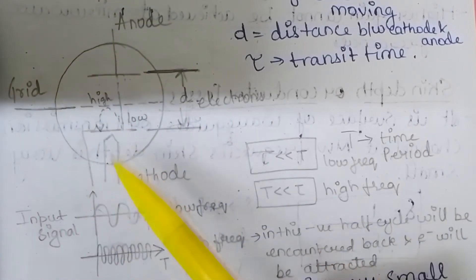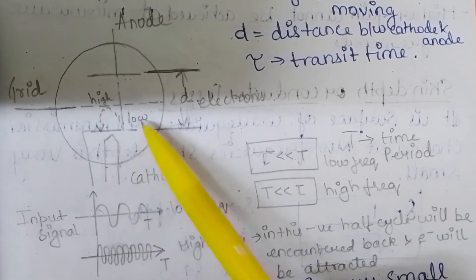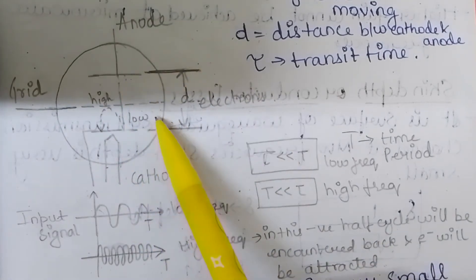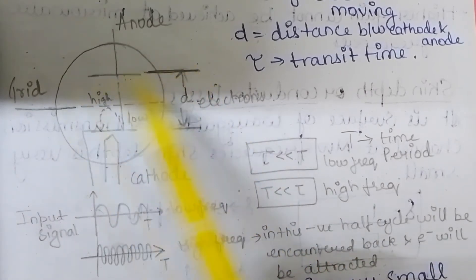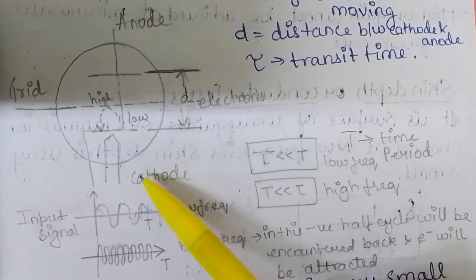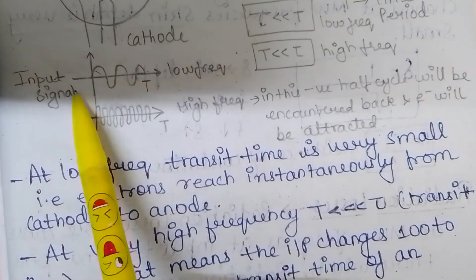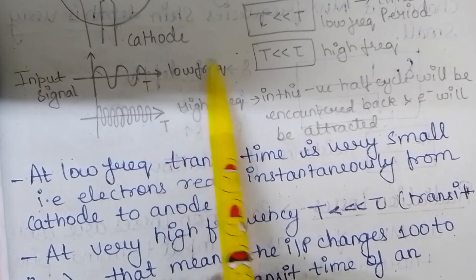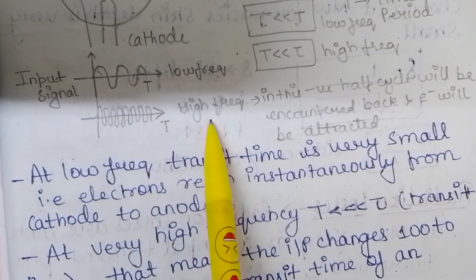As you can see in this diagram, this is the anode, this is the grid, this is the cathode, and this is the heater. The electrons travel from the cathode to the anode. The time taken for the electrons to cover this distance between cathode and anode is the transit time. This is the input signal at low frequency, and this is the input signal at high frequency.